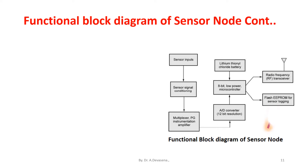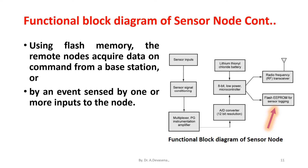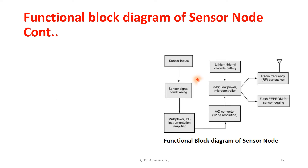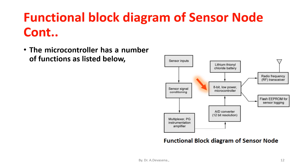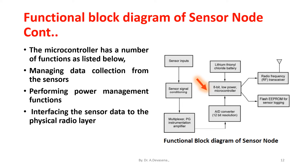Using flash memory, the remote nodes acquire data on command from a base station or by an event sensed by one or more inputs to the node. Moreover, the embedded firmware can be upgraded through the wireless network in the field. The microcontroller has a number of functions: managing data collection from the sensors, performing power management functions, interfacing the sensor data to the physical radio layer, and managing the radio network protocol.